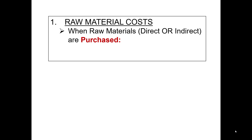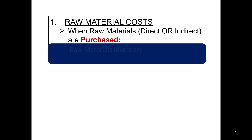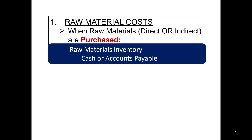When raw material is purchased, whether it is direct or indirect, it will increase the raw material inventory account and you will credit cash or accounts payable. This is no different than what you learned in your first accounting course — if you buy inventory, it increases the inventory account, which is a current asset. Notice that it does not matter if the costs are direct or indirect material.